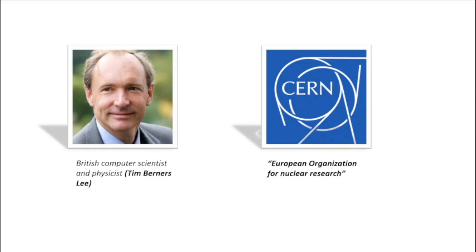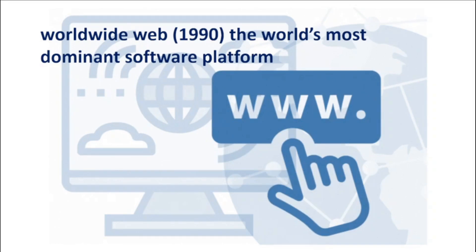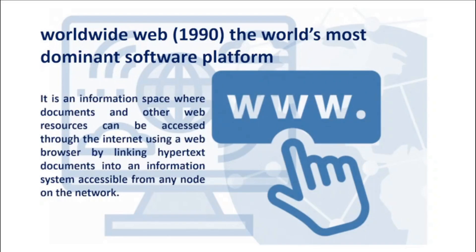British computer scientist and physicist Tim Berners-Lee, a researcher at CERN — the European Organization for Nuclear Research — proposed and prototyped the project Enquire in 1980, a simple hypertext program that had some of the semantics of the World Wide Web, used to share documents at CERN. Then in late 1989, Tim Berners-Lee wrote a memo suggesting an internet-based hypertext system, and after that he created the World Wide Web in 1990 — the world's most dominant software platform — an information space where documents and other web resources can be accessed through the internet using a web browser.